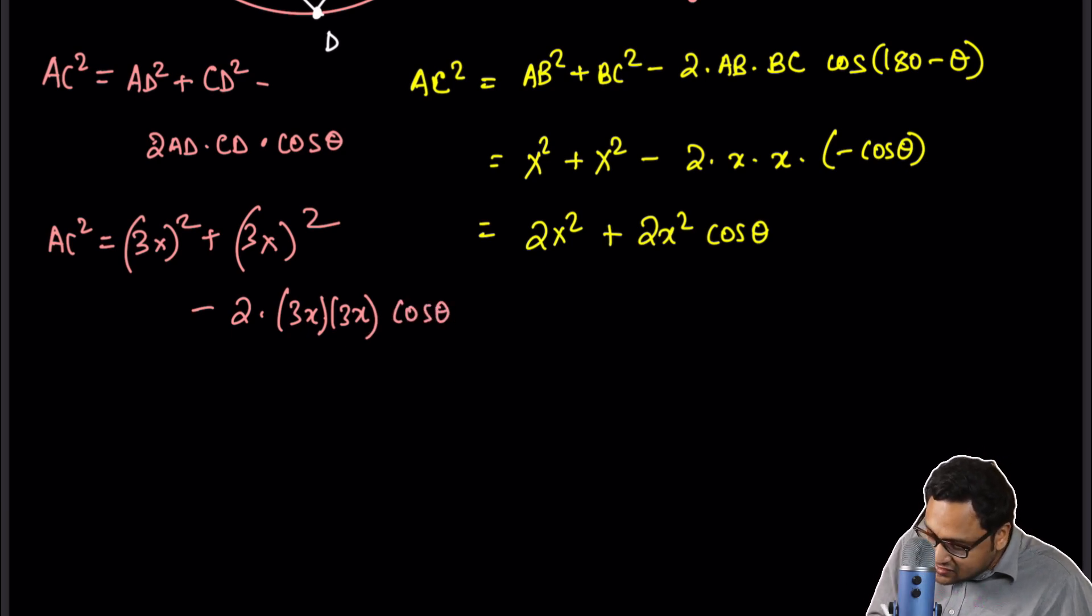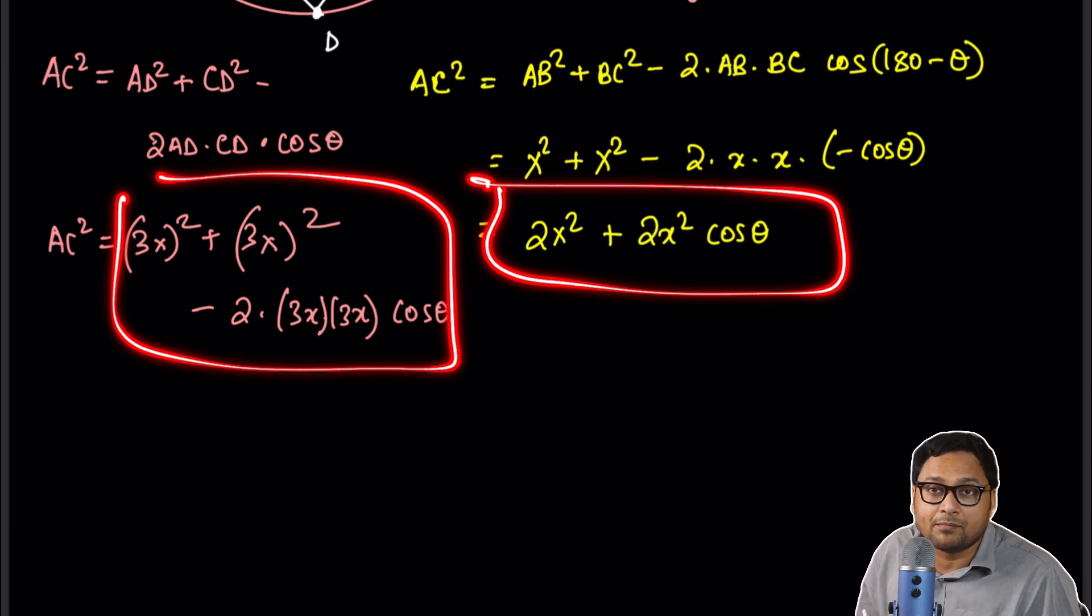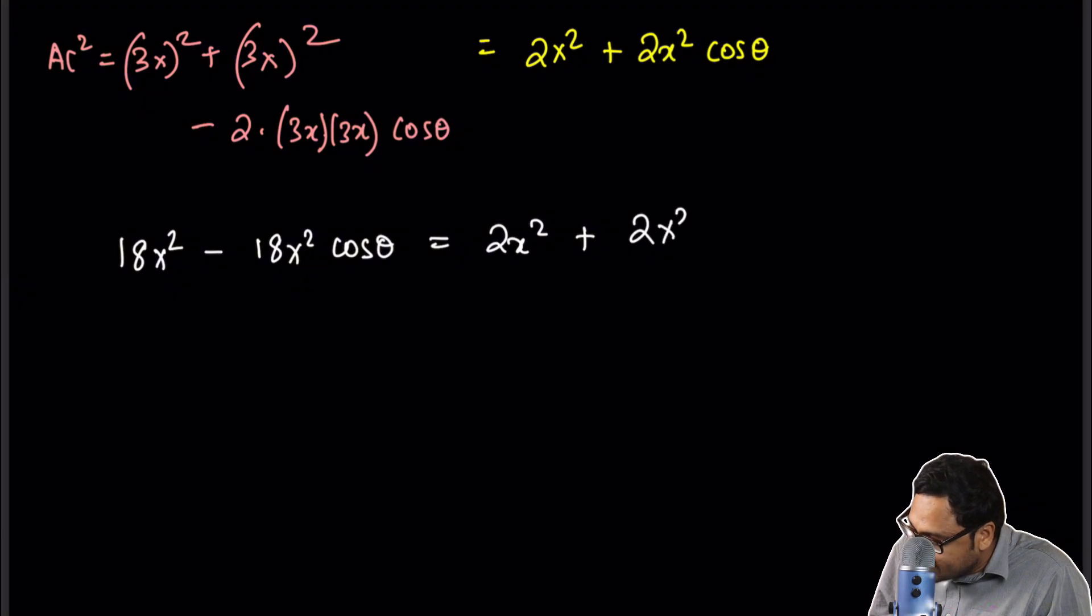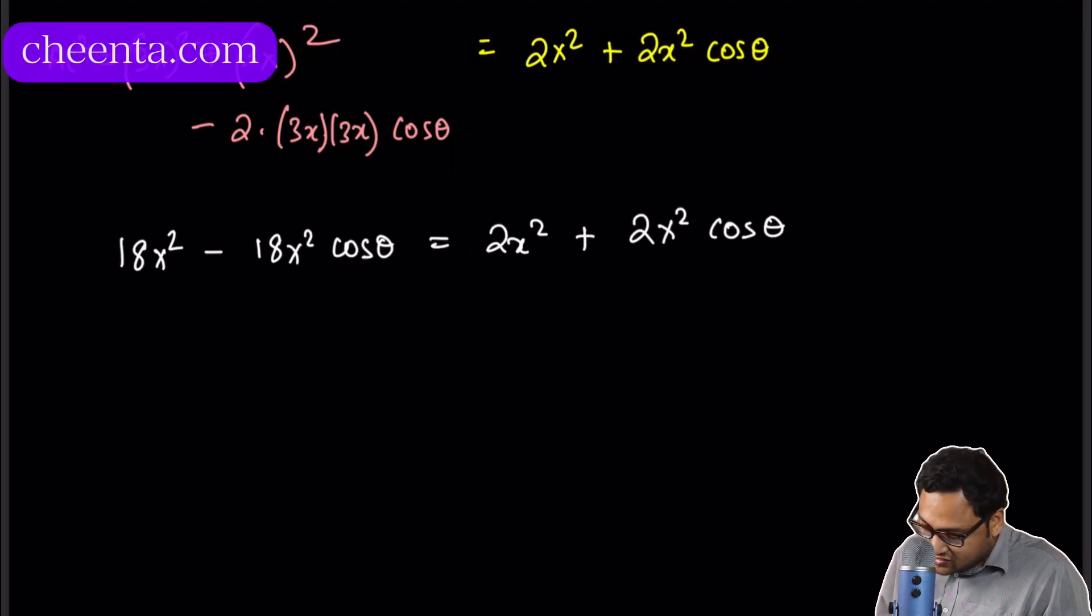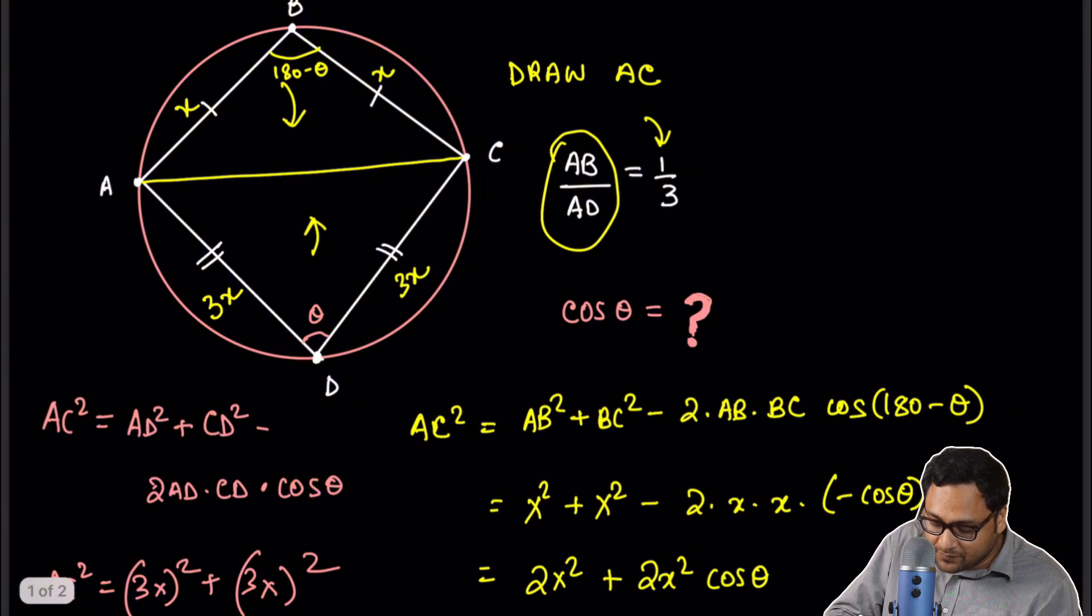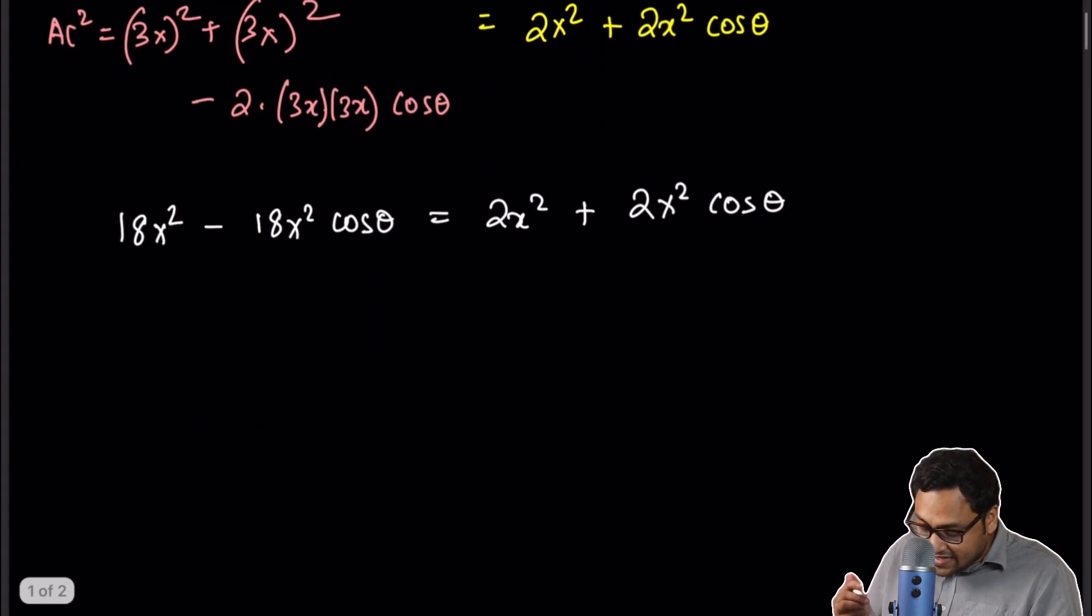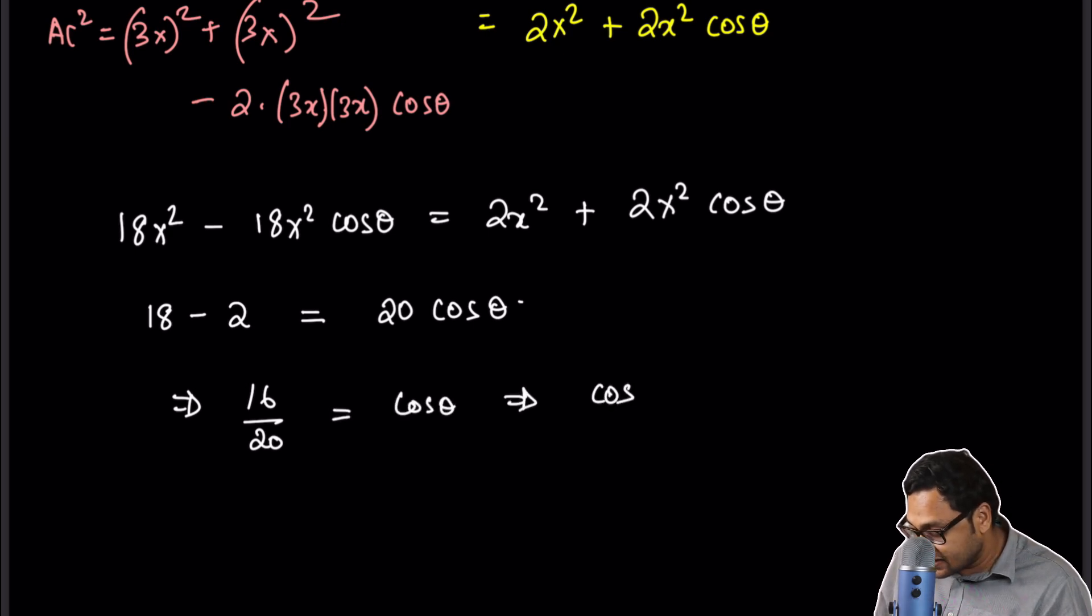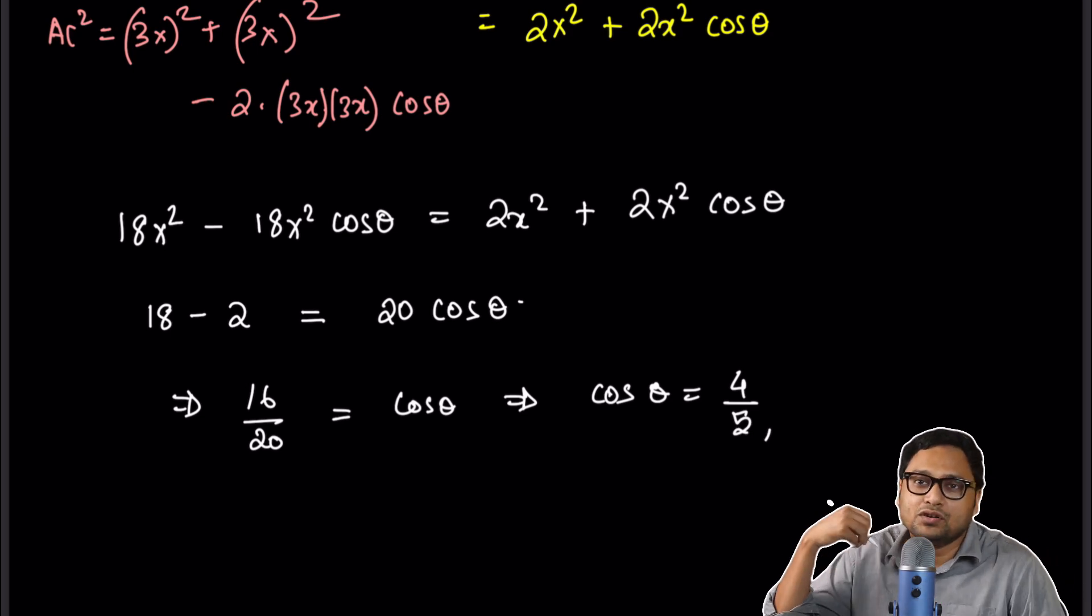So these two objects are equal because both of them are equivalent to AC squared. So now we will equate them. This is 18X square minus 18X square cosine theta is equal to 2X square plus 2X square cosine of theta. So I can just cancel off the X square. We have to be sure that X is not zero. But obviously, X is not zero. It's the length of this side. So we can cancel off the X square. So I have 18 minus 2 is equal to 20 cosine theta or 16 by 20 is cosine theta or cosine theta is 4 by 5. So we get cosine of theta.